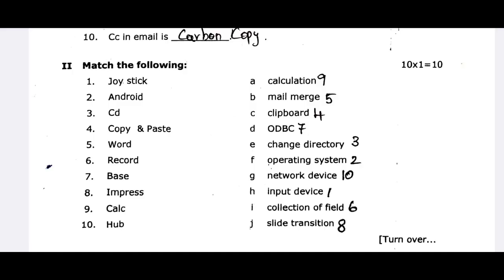The next one is ODBC — that is the connection name. IMPRESS is the slide transition feature. IMPRESS is the PowerPoint equivalent in OpenOffice. The next one is CALC — we use CALC for Microsoft Excel equivalent. It is excellent.